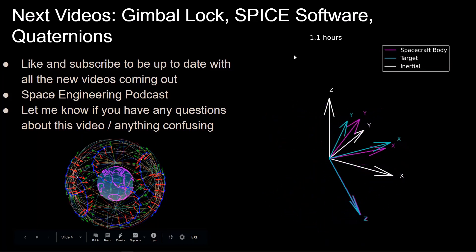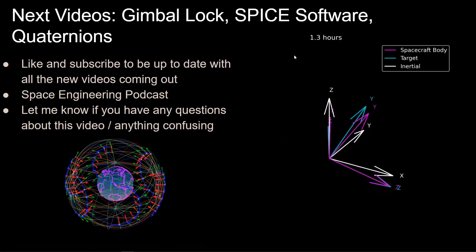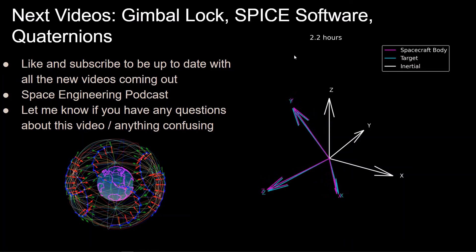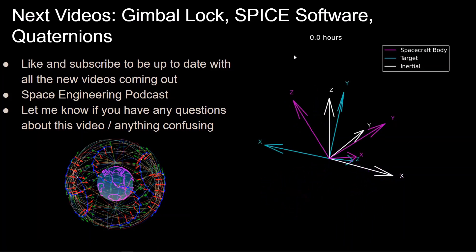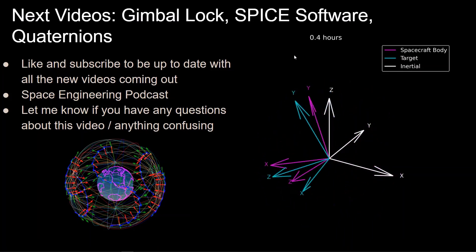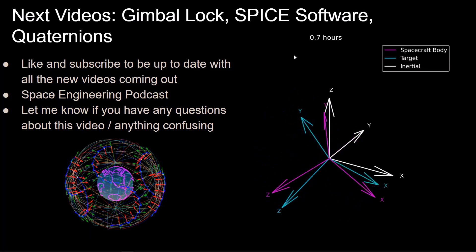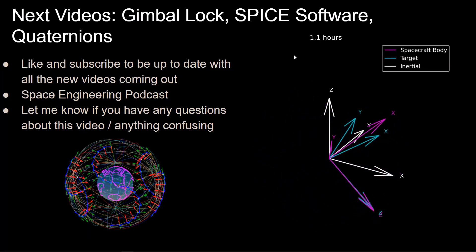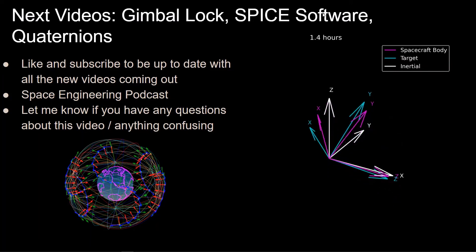In the next few videos I'll be covering gimbal lock — what happens when the second rotation in the Euler angle sequence is 90 or -90 degrees — the SPICE software for Euler angles and rotation matrices, and quaternions, all as prerequisites for the spacecraft attitude control with Python series. Let me know any questions and comments you have, and thank you for watching.